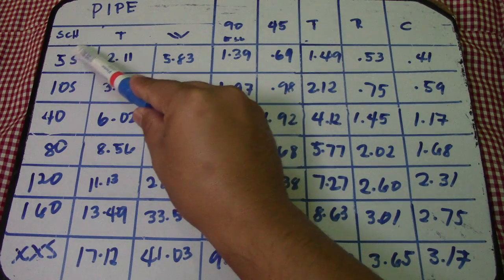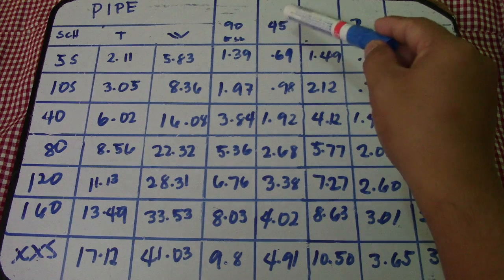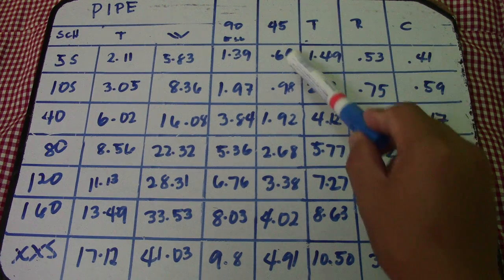Based on schedule and thickness. 45 elbow: 0.69, 0.98,